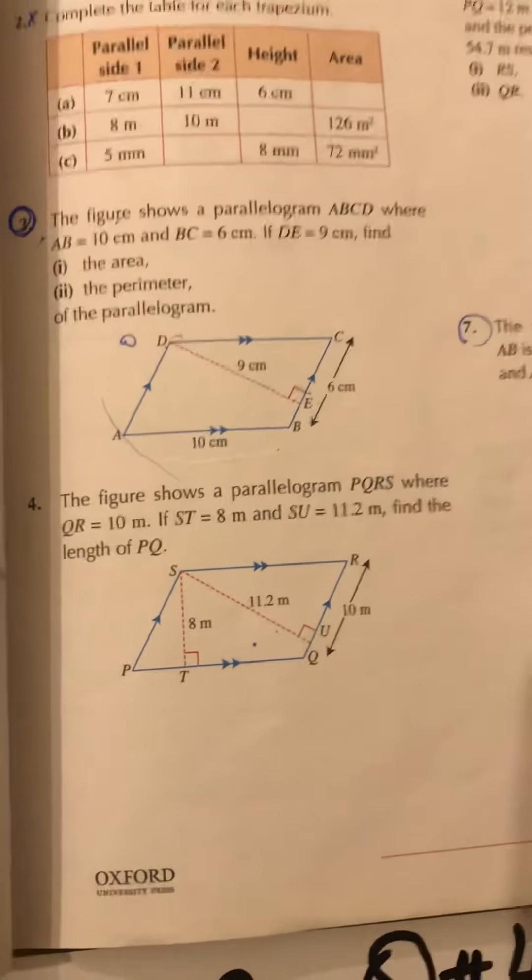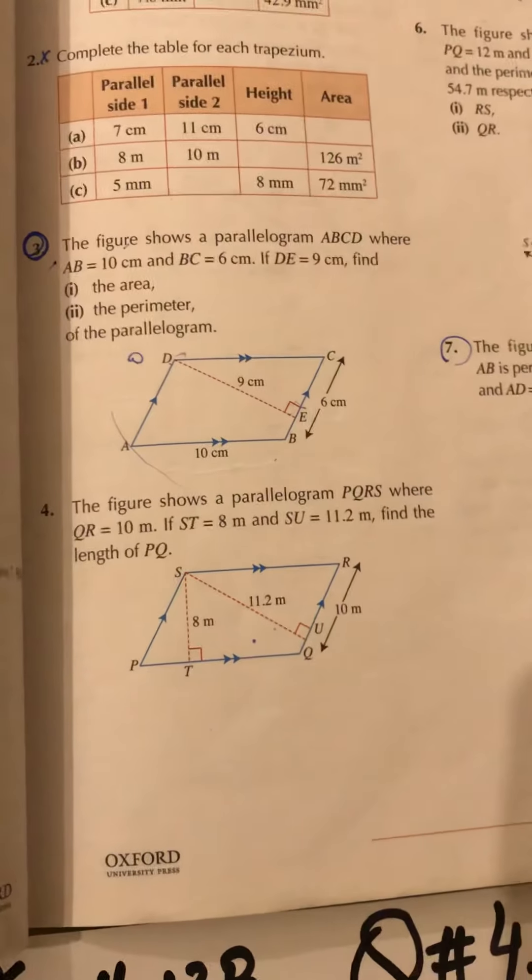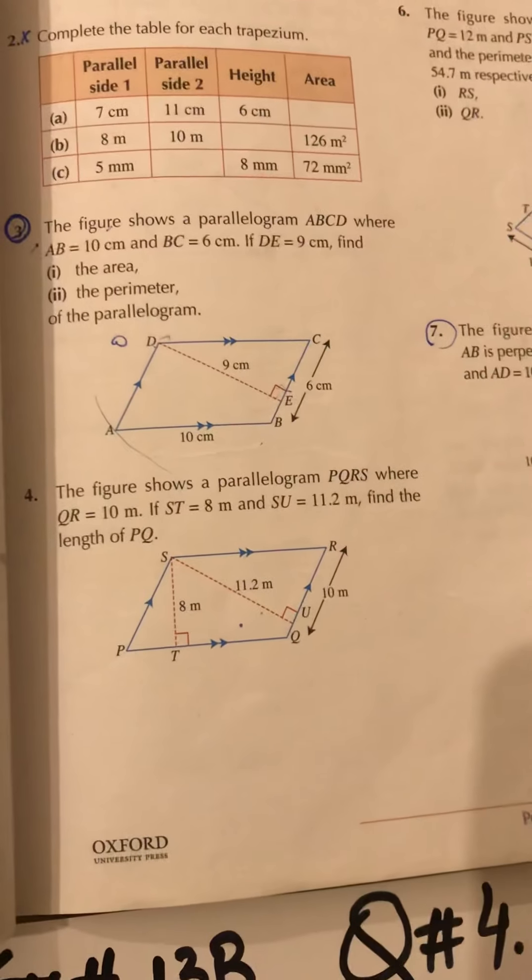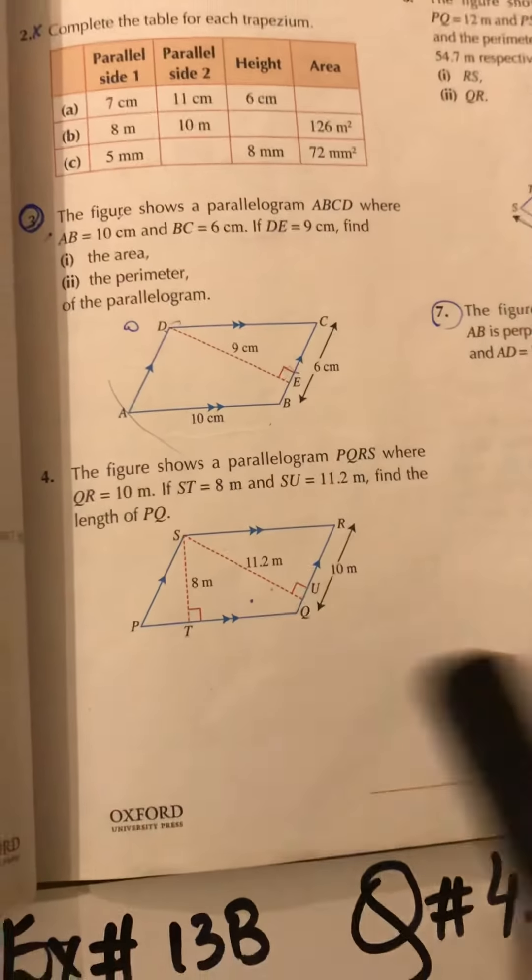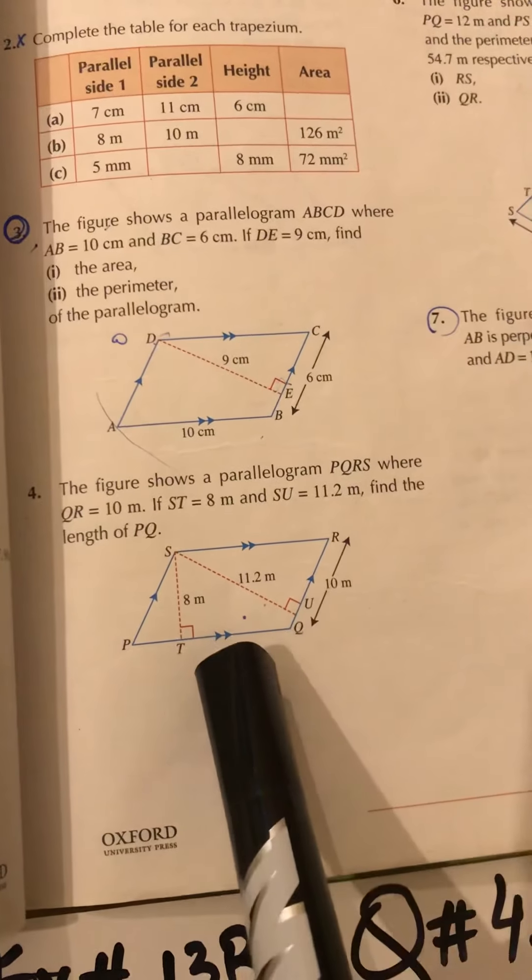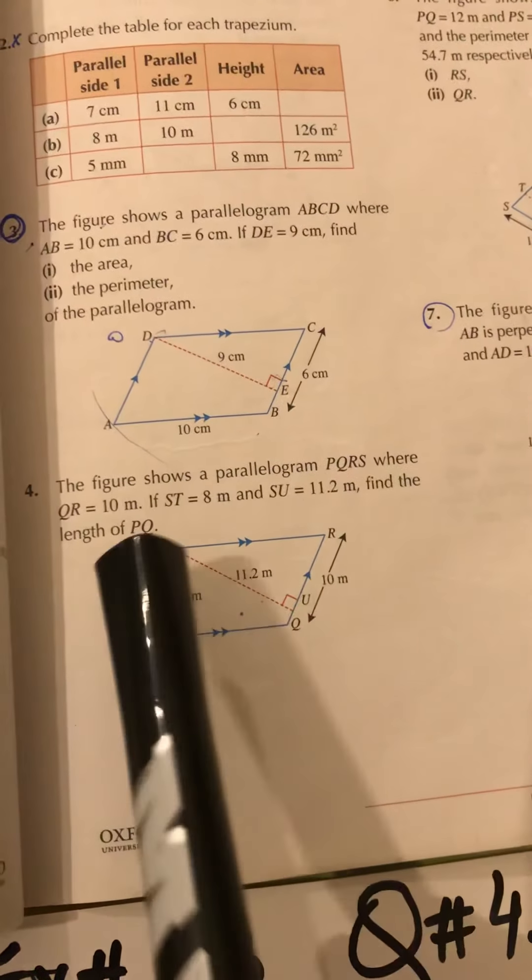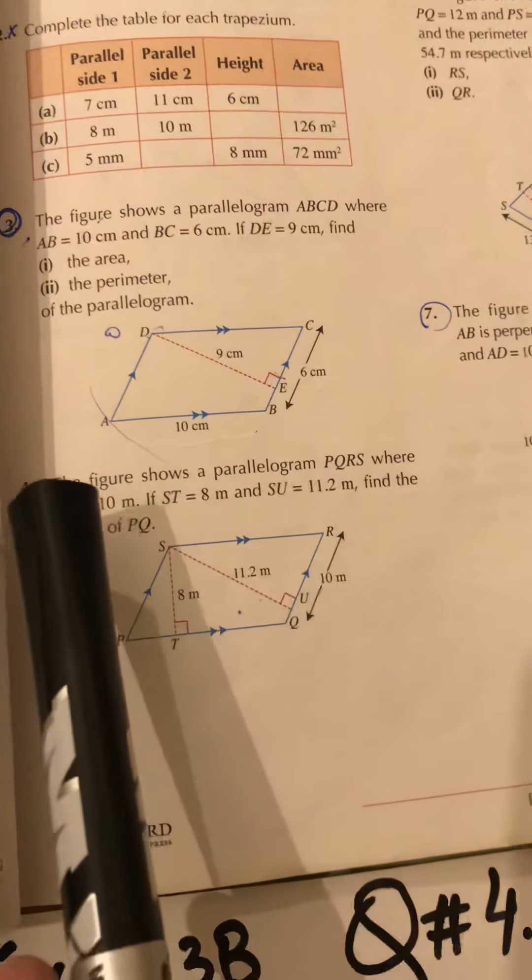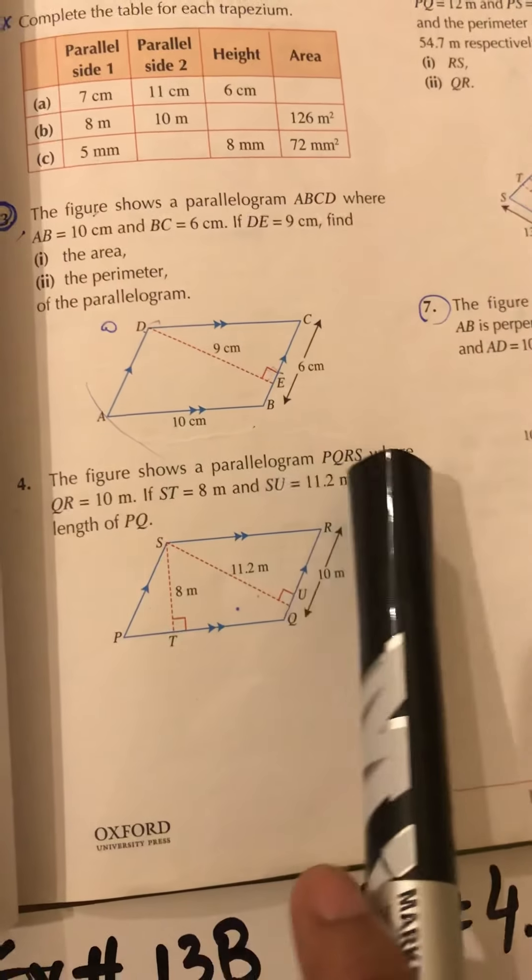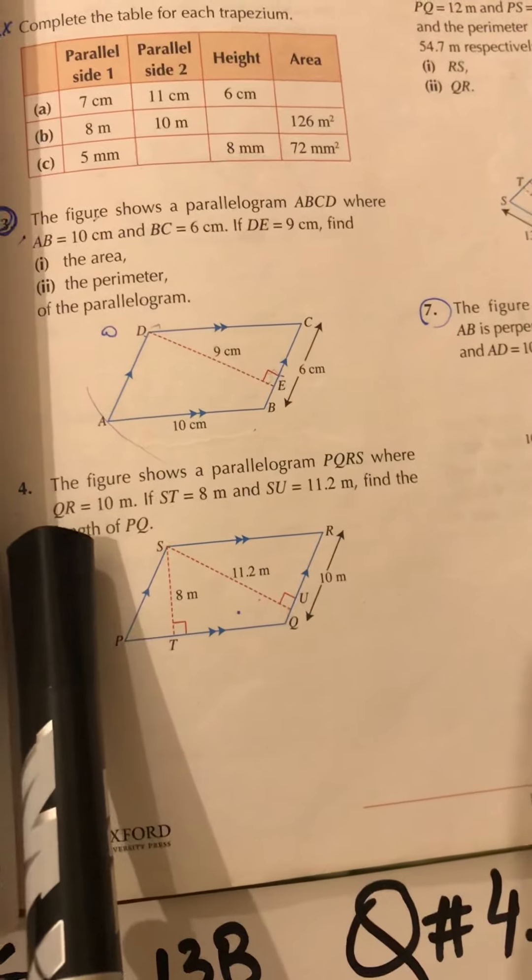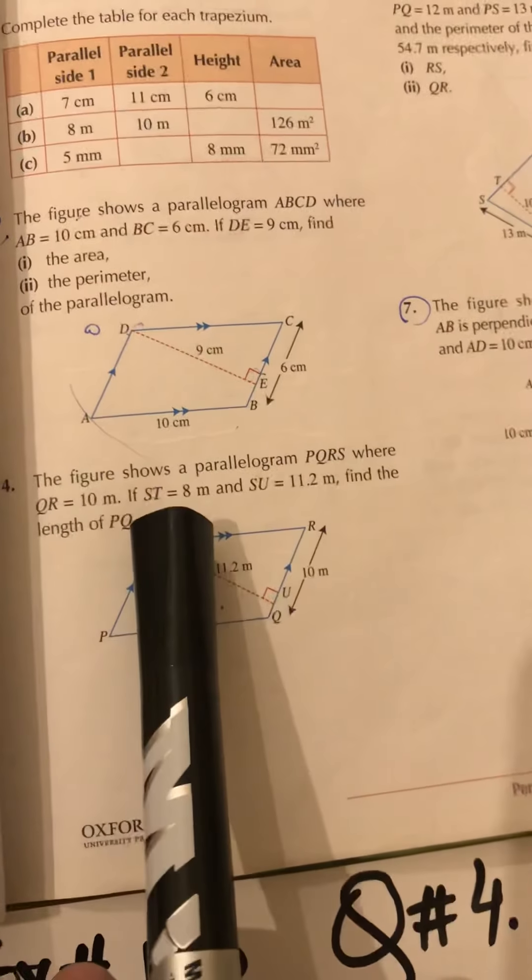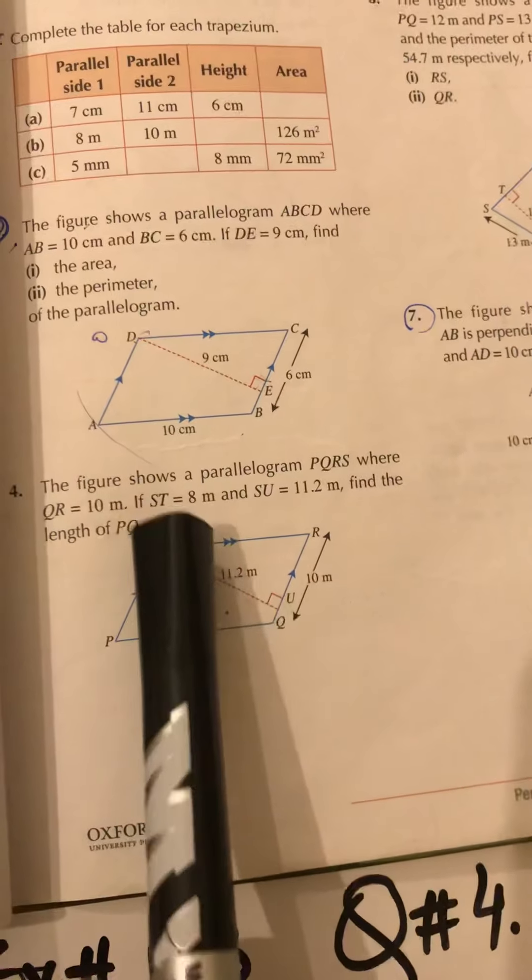Read the question very properly and observe and analyze the dimensions of the figure very properly. As it can be seen, it is a parallelogram because we have got two sets of parallel sides over here. SR is parallel to PQ and QR is parallel to PS. The figure shows a parallelogram PQRS where QR is equals to 10 meters, ST is equals to 8 meters.